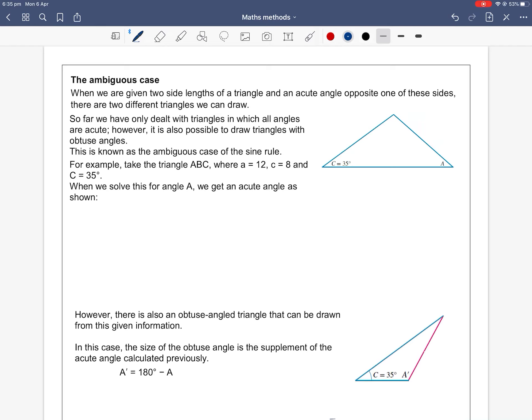So today we're going to look at the ambiguous case of the sine rule, so page 6 and 7. Last lesson we introduced the sine rule, which was the side length A divided by the sine of the corresponding angle A equals the side length B divided by the sine of the corresponding angle B. So what is the ambiguous case?